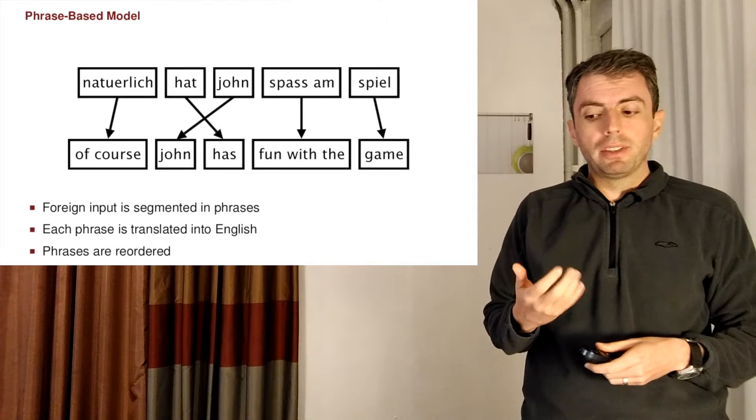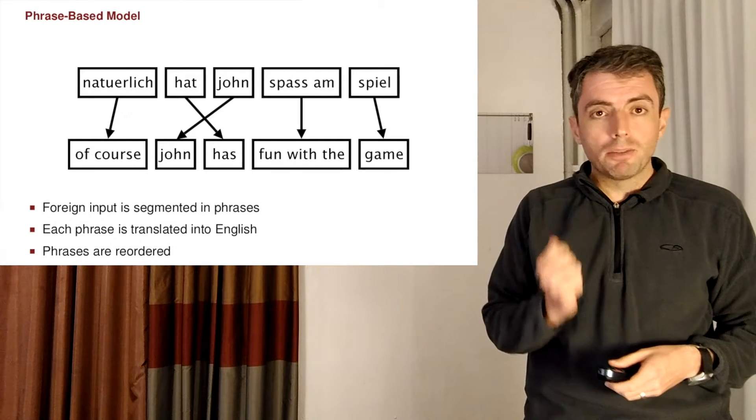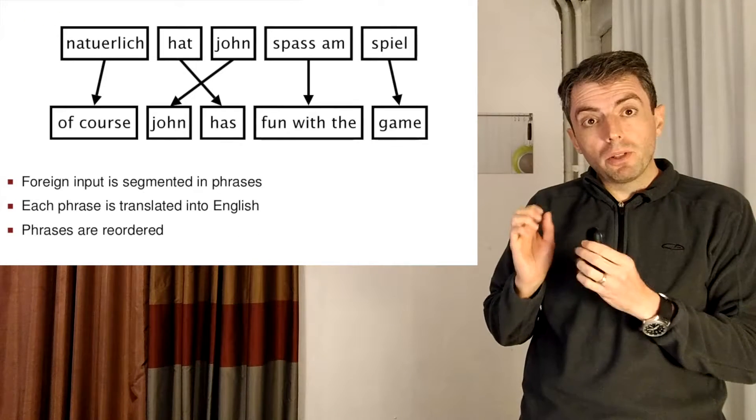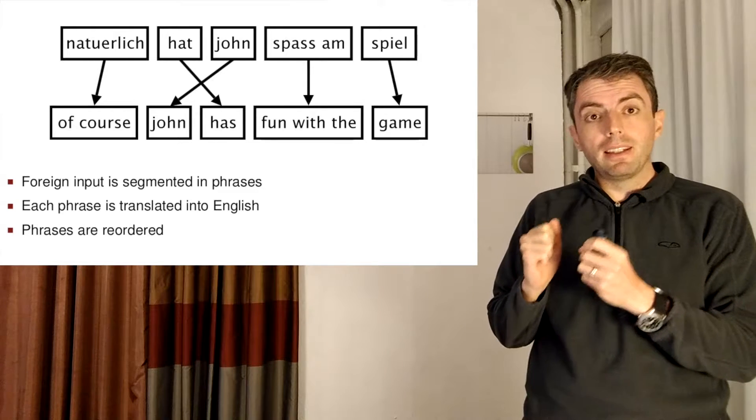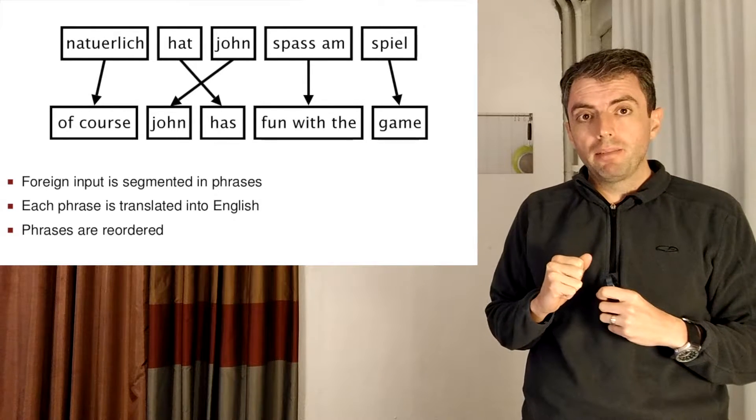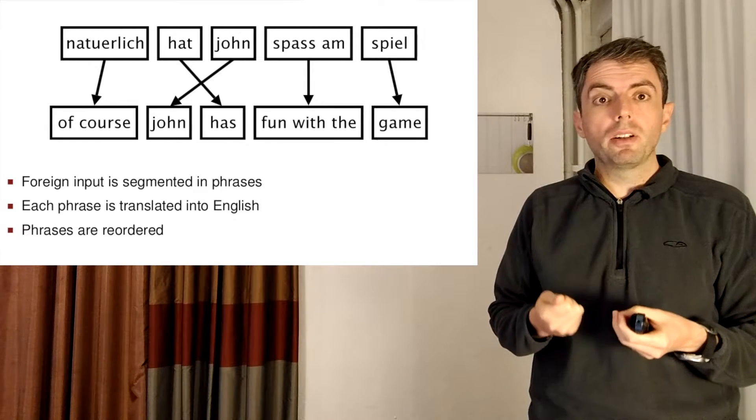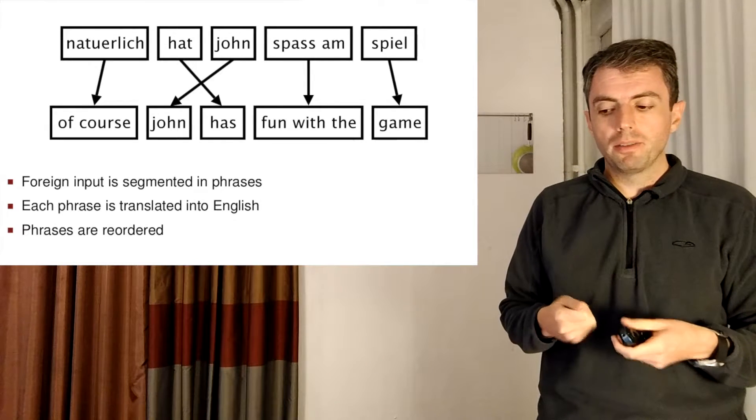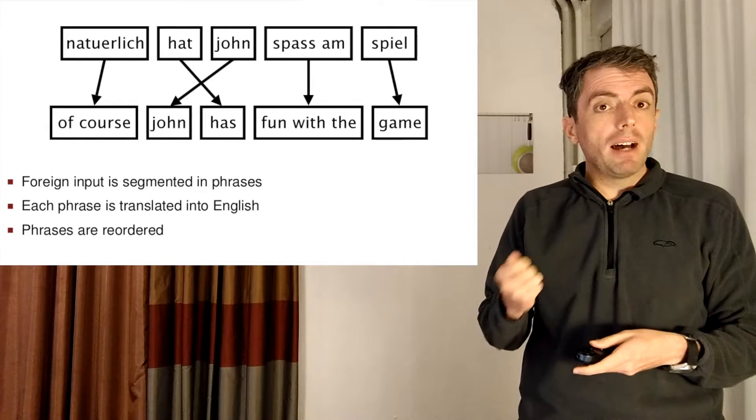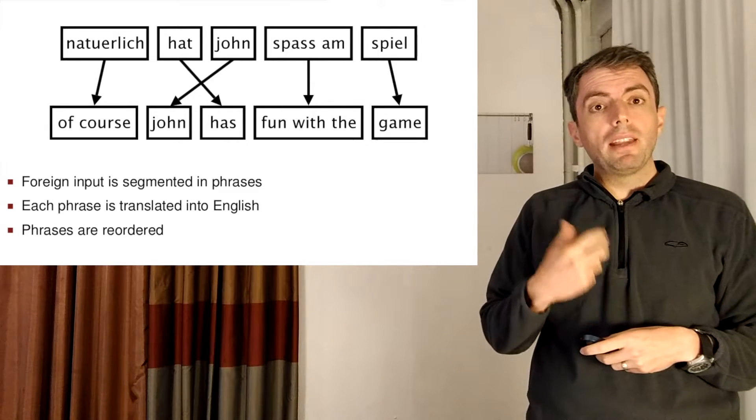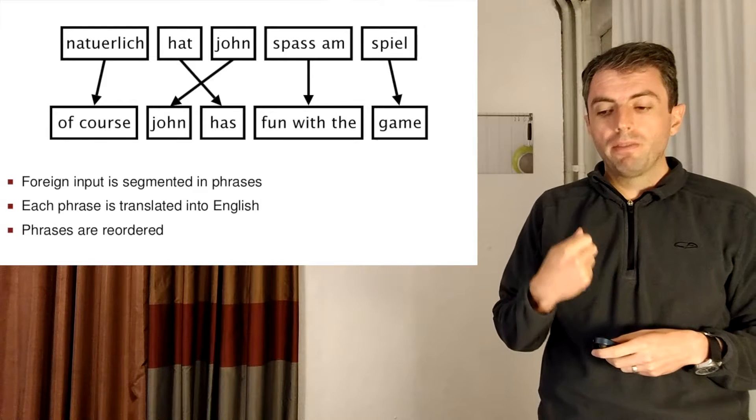So let's take an example sentence. Natürlich hat John Spaß am Spiel. If you take a look, we can translate these phrase by phrase. So natürlich isn't going to be translated as a single word. It's going to be translated as 'of course.' And Spaß am are two words in German that are going to be translated to 'fun with.'